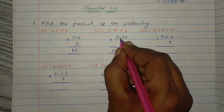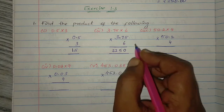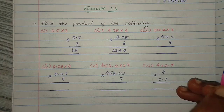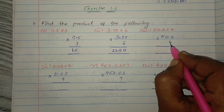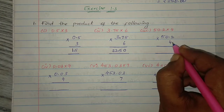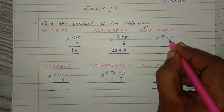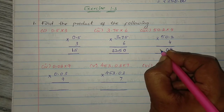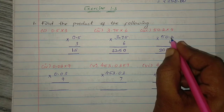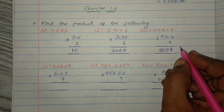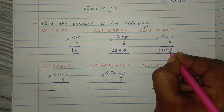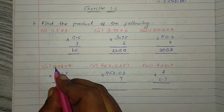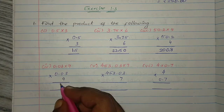Decimal point comes — 2 digits before. So place decimal point 2 digits before. Okay. Next: 50.2 into 4. 2 fours are 8, 0 fours are 0, 5 fours are 20. Decimal point comes — 1 digit before. So 1 digit before decimal point: 200.8.